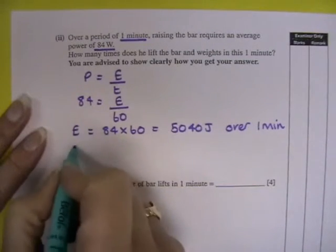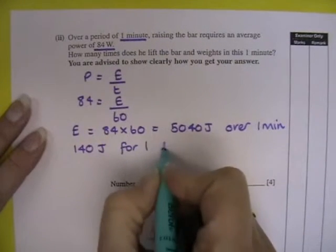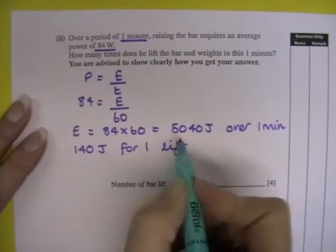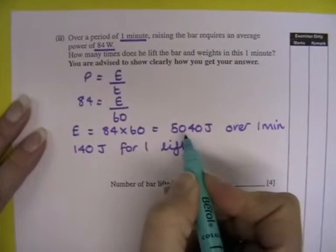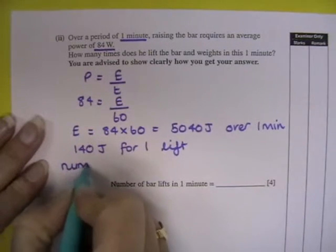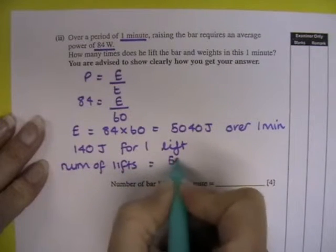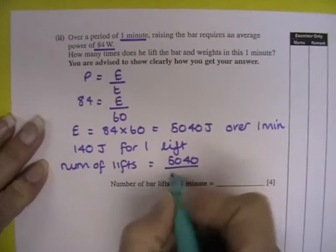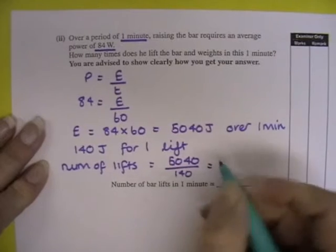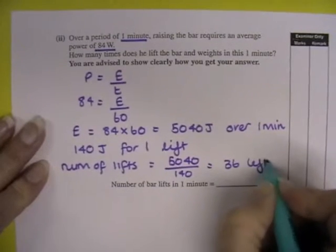In the previous question, we were told we used 140 joules for one lift. If we use up 5040 joules during one minute, the number of lifts is the total energy divided by the energy per lift, which works out to be 36 lifts.